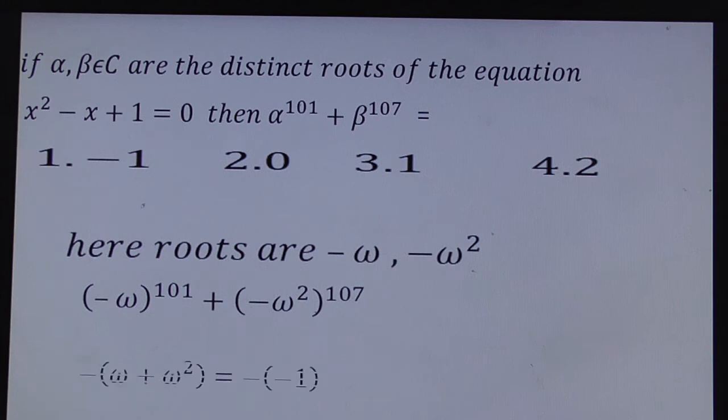So therefore, finally you get this is minus, not 1 but minus. Here you get ω², here you get ω. Therefore, this is -(ω + ω²). Since 1 + ω + ω² = 0, by using this ω + ω² = -1.